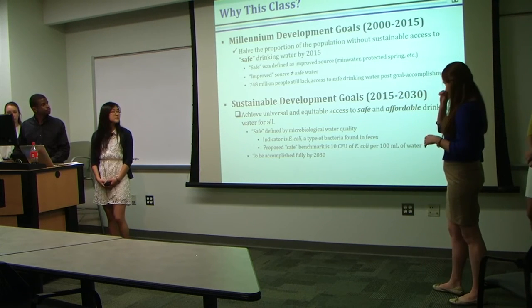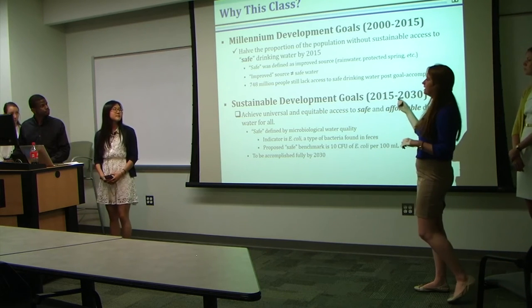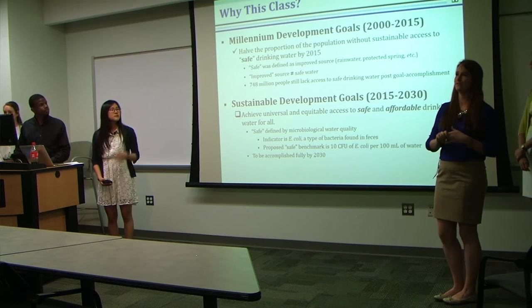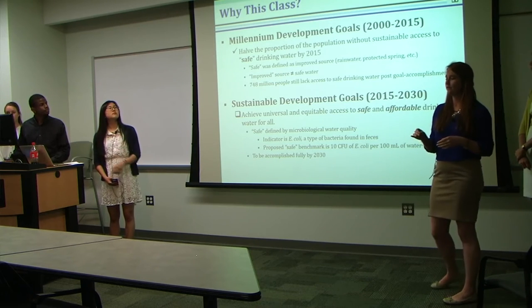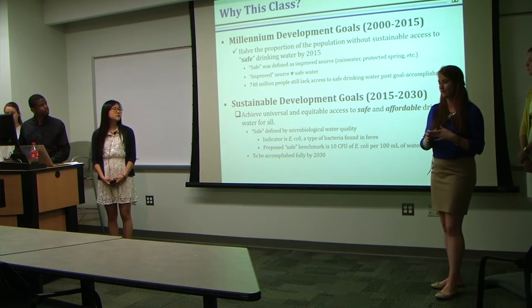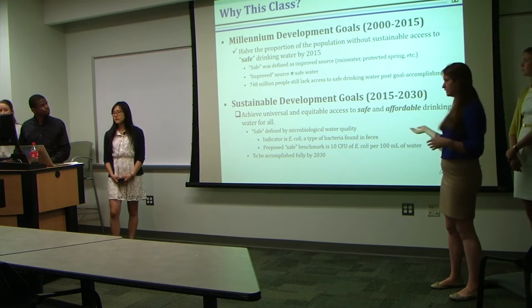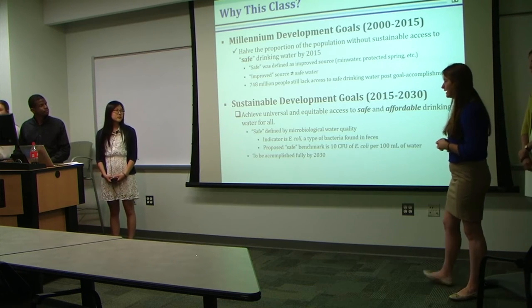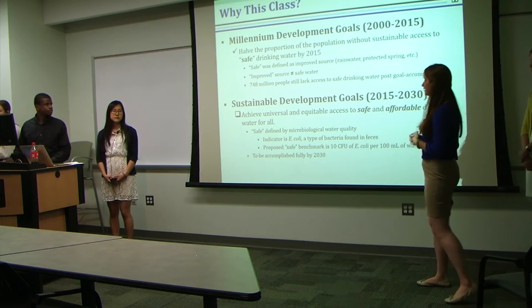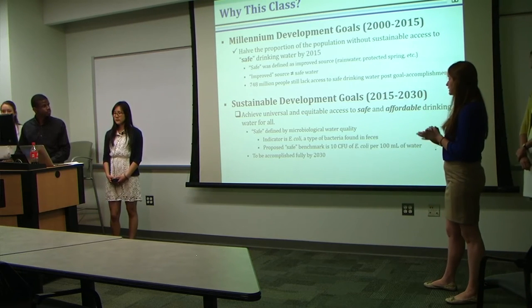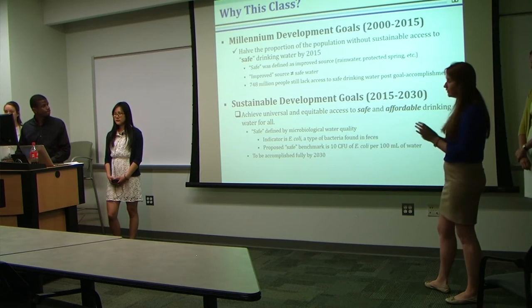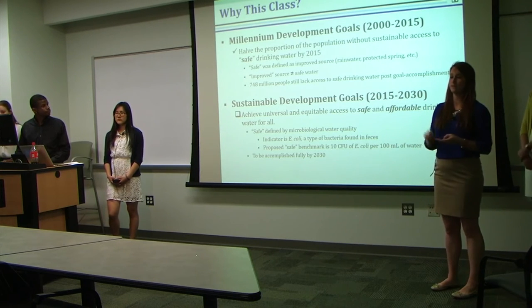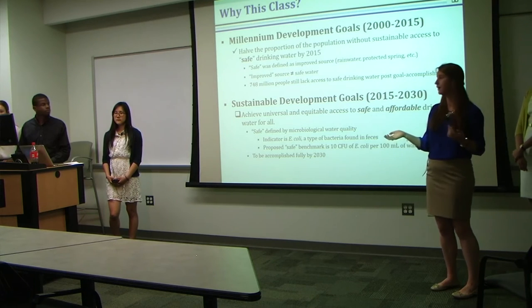So even after this goal was accomplished, 748 million people still lacked access to clean and safe drinking water. They came back together and are working on the Sustainable Development Goals. One of these that the water team wants to look at is to achieve universal and equitable access to safe and affordable drinking water for all—meaning globally, in homes, in schools, and in public health facilities, everybody has clean drinking water.